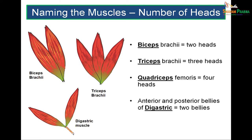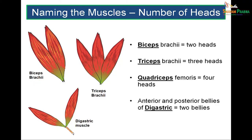Naming muscles based on number of heads: a muscle could have two heads — biceps; three heads — triceps; or four heads — quadriceps. The two-headed muscle is the biceps brachii, and the three-headed muscle is the triceps brachii. The digastric muscle — 'di' meaning two, 'gaster' meaning belly — is the two-bellied muscle.